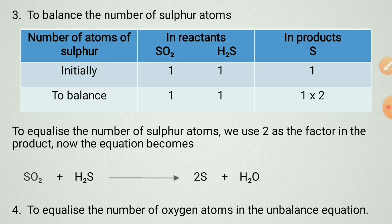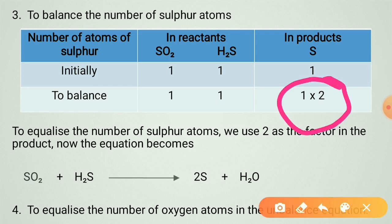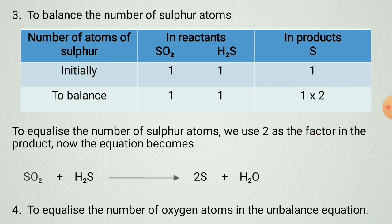To balance sulfur, the reactant side has SO₂ and H₂S; the product side has sulfur (S). Multiply the product side by two to equalize the sulfur atoms. This also requires balancing oxygen: put two on the product H₂O side to equalize the number of oxygen atoms in the equation.